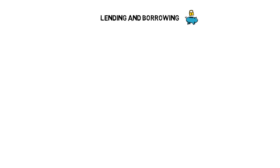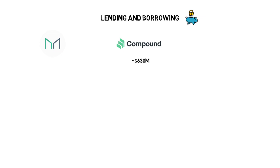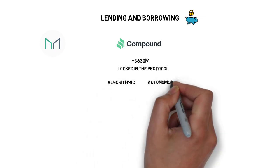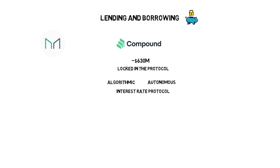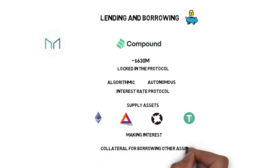Besides MakerDAO that we just mentioned, there are a few other important DeFi projects in this category. The main one is Compound. Compound, at the time of creating this video, is the biggest DeFi project in the lending category with around 630 million dollars worth of assets locked in the protocol. Compound is an algorithmic autonomous interest rate protocol that allows users to supply assets like Ether, BAT, 0x or Tether and start making interest. Supplied assets can also act as collateral for borrowing other assets. Another popular DeFi project in this category is Aave.